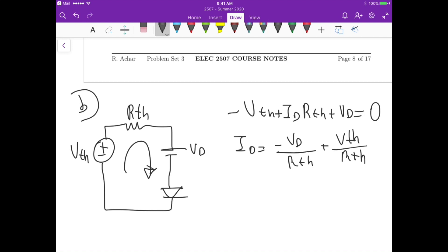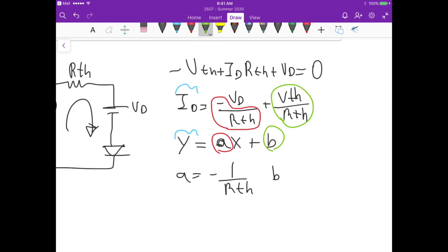Now, if we analyze this equation, we can see that we can write this as like a general form of a line, a straight line. So it's I equals to minus A, or like A times X plus B. Now Y here is, so ID is Y, the coefficient A is minus 1 over RTH and B is just this constant term here that it's VTH divided by RTH.